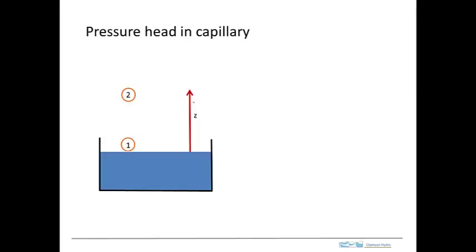Another way to view this is to look at the pressure head in a capillary. A capillary is a small tube, and we put this small tube in contact with an open surface of water. When we do this, the water is pulled up into the small tube and rises up to an elevation Z. This could be a small glass tube, and we could visualize the water within it. It could also represent small pores — for example, if we have some paper towel and dip it into water, we see the paper towel pull the water up to some height.